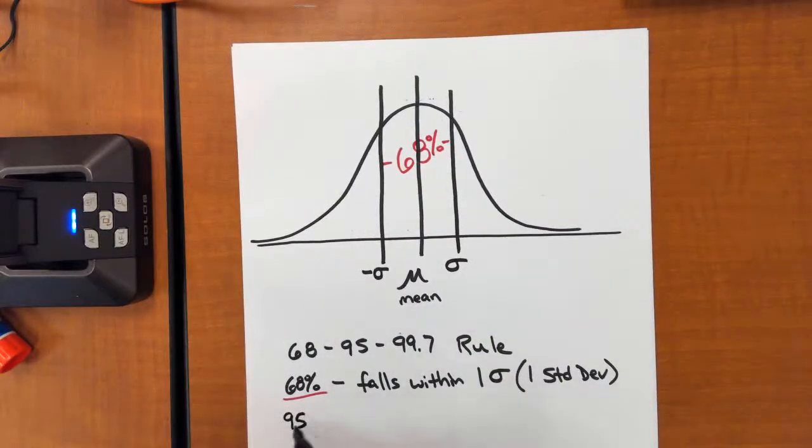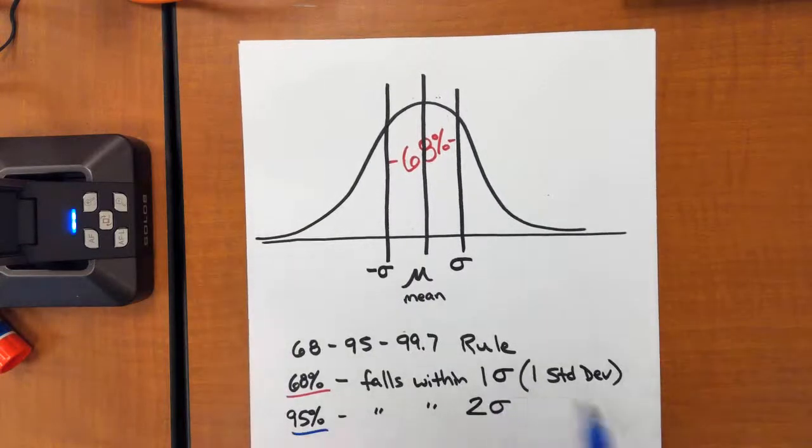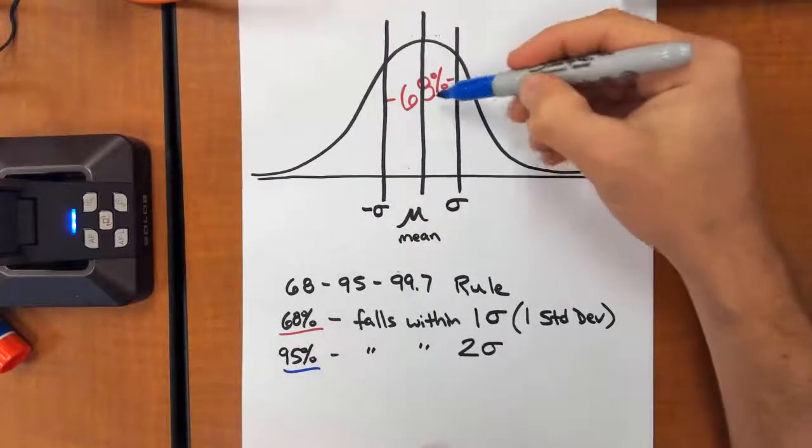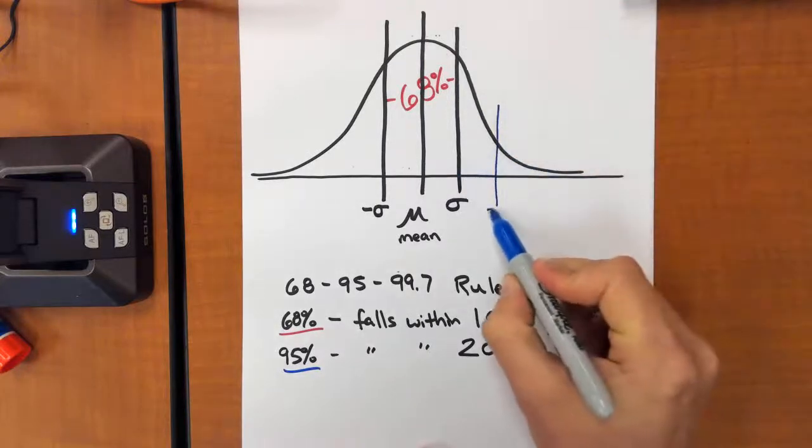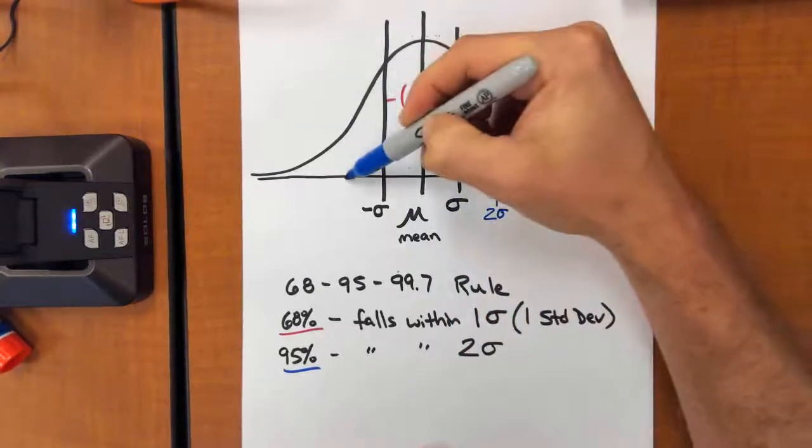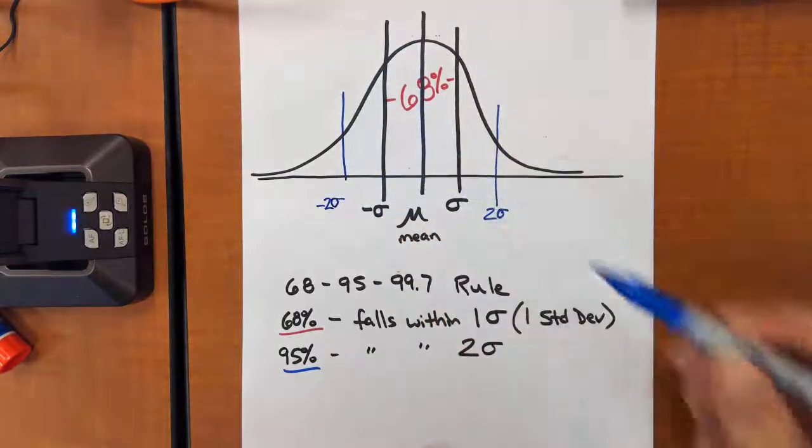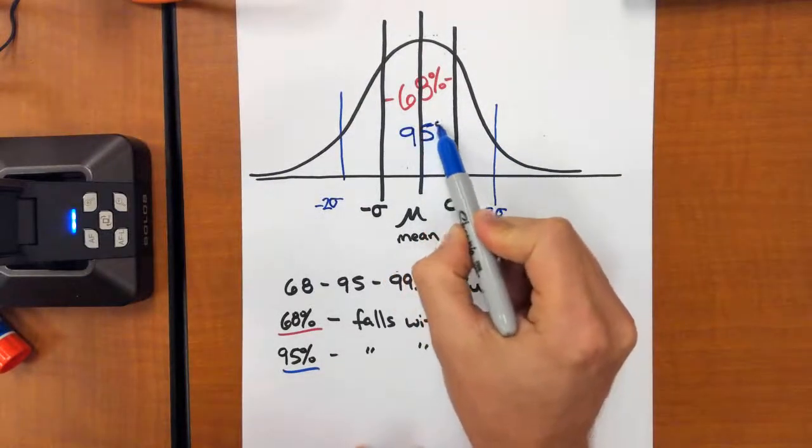And 95 is for 95% of our data would fall within two standard deviations of the mean. So that means if we come out this same distance, whatever standard deviation is, come out here, to two standard deviations past the mean, and then two to the left, minus two to the left, that we would capture 95% of our data.